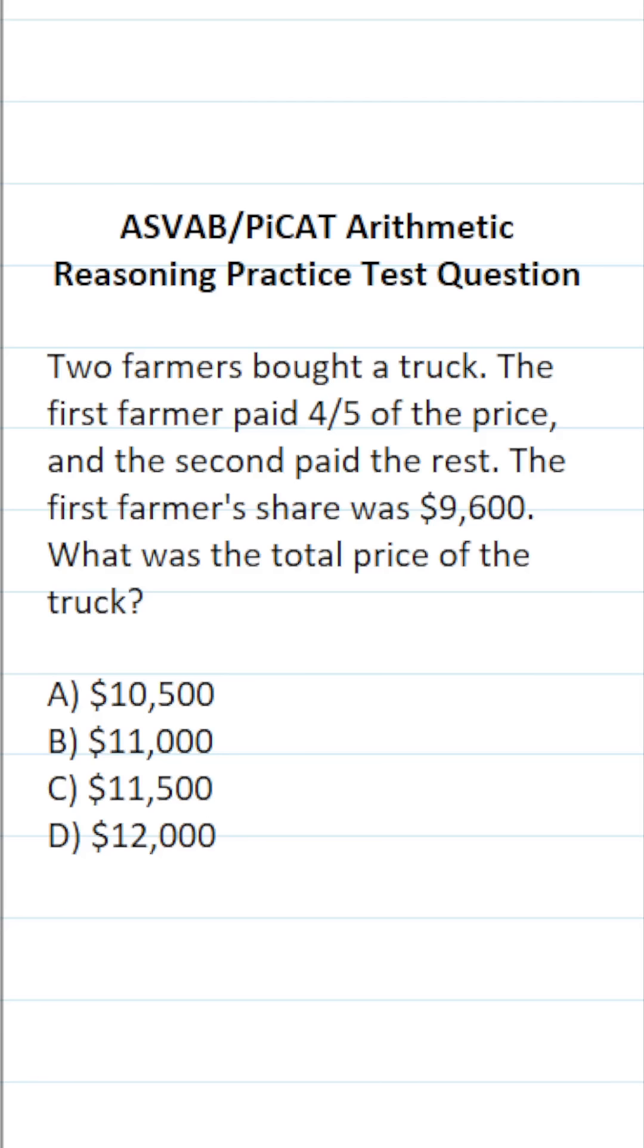This arithmetic reasoning practice test question for the ASVAB and PICAT says two farmers bought a truck. The first farmer paid four-fifths of the price and the second paid the rest. The first farmer's share was $9,600. What was the total price of the truck?